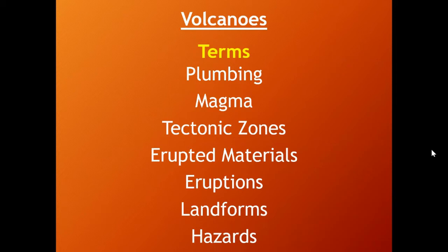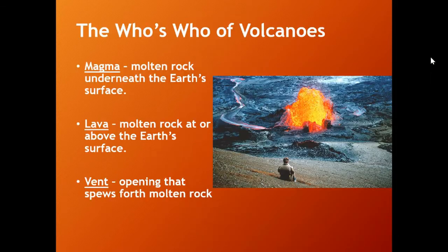Later, we'll talk about erupted materials, eruptions, and the different types of volcanic landforms that result, because different types of landforms result from different types of magmas and different types of eruptions — and then the hazards involved with volcanoes to give you some examples. Here we go, starting with volcano terms.